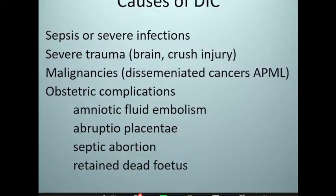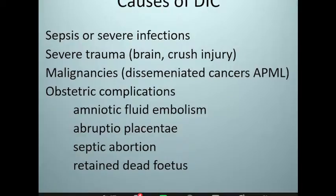Various malignancies, particularly acute promyelocytic leukemia (previously known as AML-M3 subtype), can cause DIC. The promyelocytes have granules that can activate the coagulation cascade and cause disseminated coagulopathy. Metastatic carcinomas — breast cancer, cancers from the gastrointestinal tract — towards the late stage of disease, when cancer cells have embolized into the vascular system, the coagulation cascade can be activated and we get a coagulopathy.